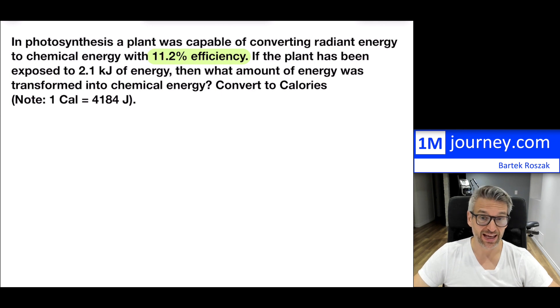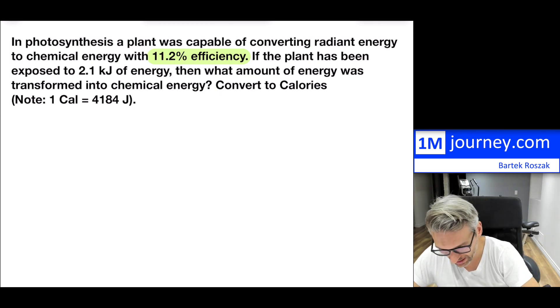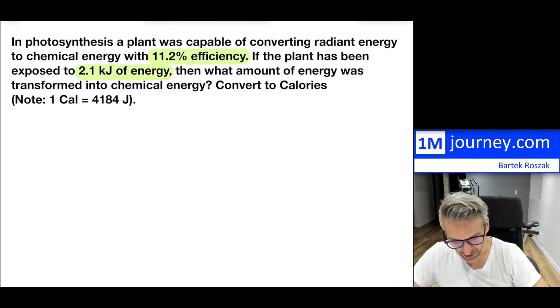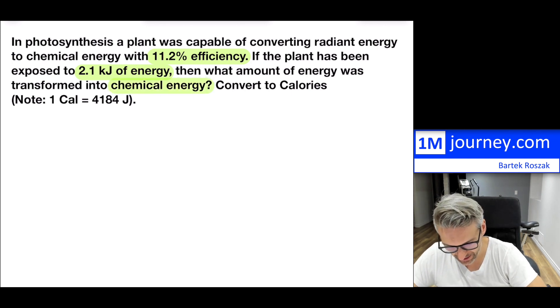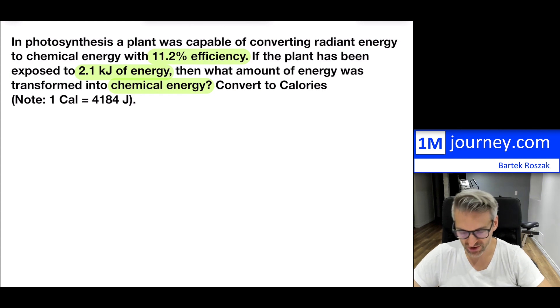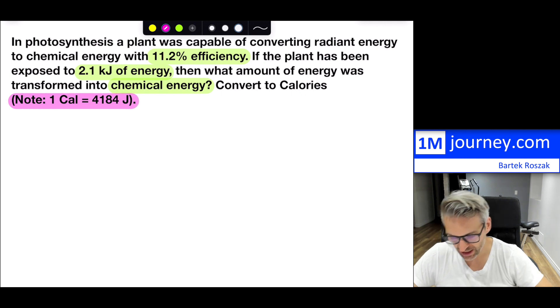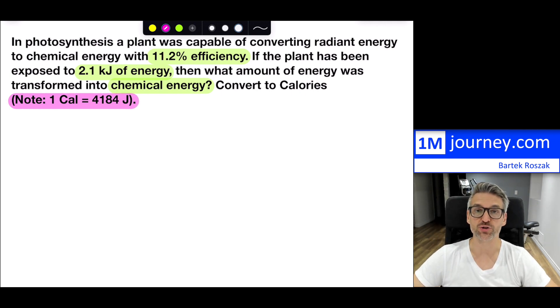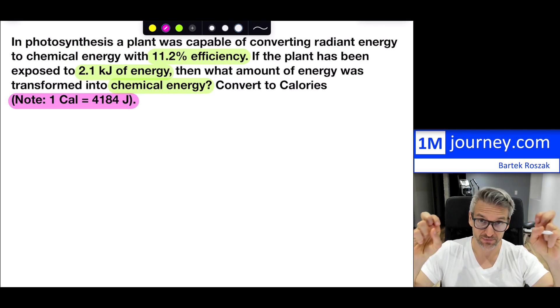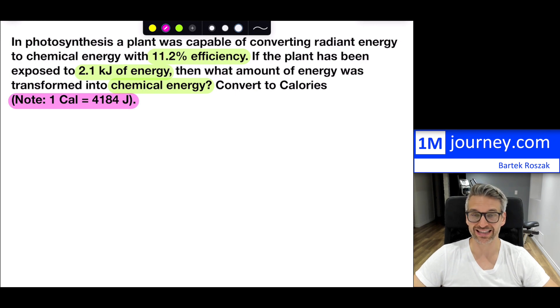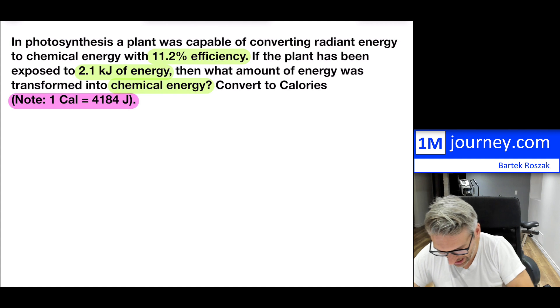We're losing almost 90% to some other form of energy, but the plant is capable of converting in photosynthesis. Let's say for this one, this example, 11.2. Now, if that plant has been exposed to 2.1 kilojoules of energy in a certain amount of time, then what amount of energy was transformed into chemical energy? All right, so we want to see what that happens. Now, convert to calories. And so here you go. So in terms of calories, what is interesting is that one calorie is approximately 4184 joules. And if this is the first time that you're getting exposed to a food calorie, so it's the capital C, this is indeed what the actual conversion ratio would be. So let's take a look and try to calculate this.